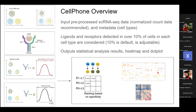We're going to talk about CellPhone first because it's faster — the methods are a bit simpler and pretty straightforward. Then we'll talk about CellChat, which has a lot more capabilities and outputs. For the CellPhone overview: you input your pre-processed single cell RNA sequencing data. They recommend normalized count data, but it will work on anything — raw data too — which is good or bad depending on what you want to do.